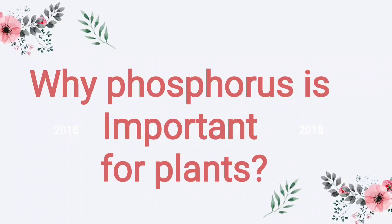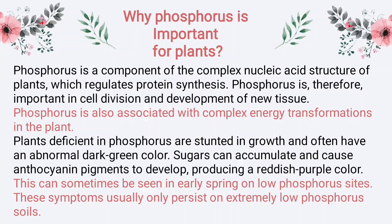Why is Phosphorus important for plants? Phosphorus is a component of the complex nucleic acid structure of plants, which regulates protein synthesis. It is therefore important in cell division and development of new tissue. Phosphorus is also associated with complex energy transformations in the plant. Plants deficient in phosphorus are stunted in growth and often have an abnormal dark green color. Sugars can accumulate and cause anthocyanin pigments to develop, producing a reddish purple color, sometimes seen in early spring or low phosphorus sites.